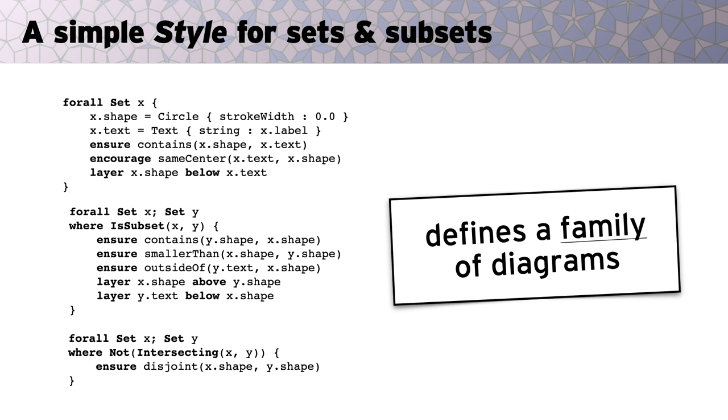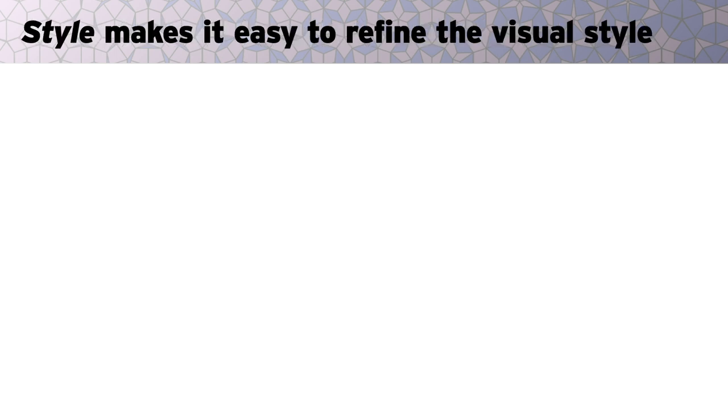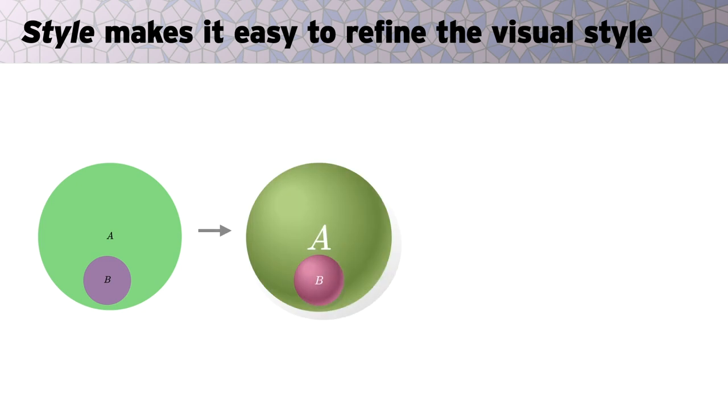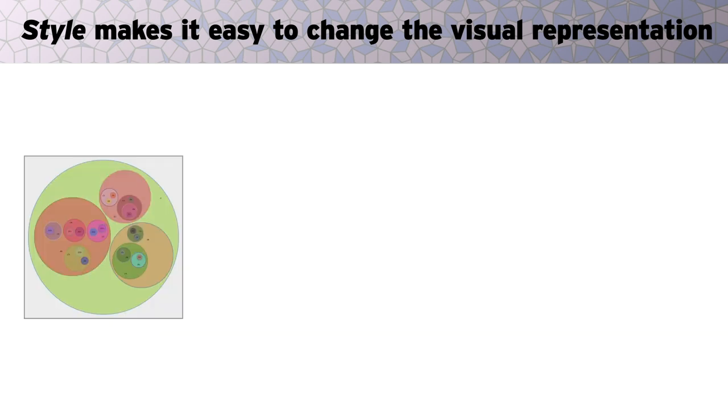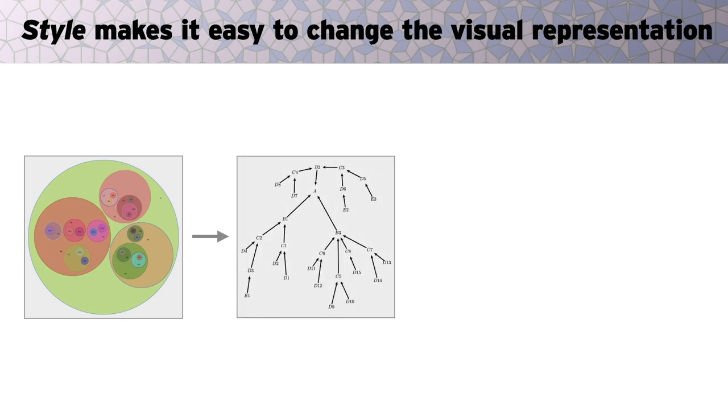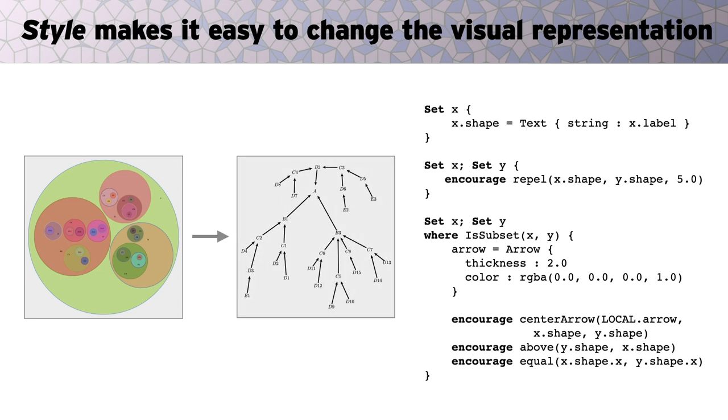and since the rules are generic, they can be applied to any substance program. A benefit of this approach is that if we want to change the appearance of a big collection of diagrams, we can just update a single style file rather than editing diagrams one by one. For instance, we could add some shading and shadows, then scale labels to the circle size to make them more legible. We can also change the visual representation altogether. For instance, if there are deeply nested subset relationships, then drawing these relationships as trees might be a lot easier to read. Here we just swap out the previous style with the new one, where set containment gets translated into a parent-child relationship on the tree.